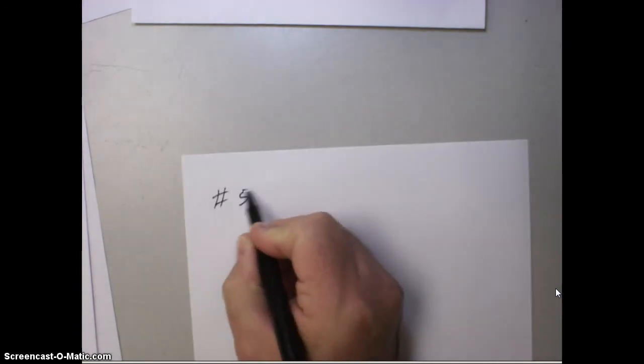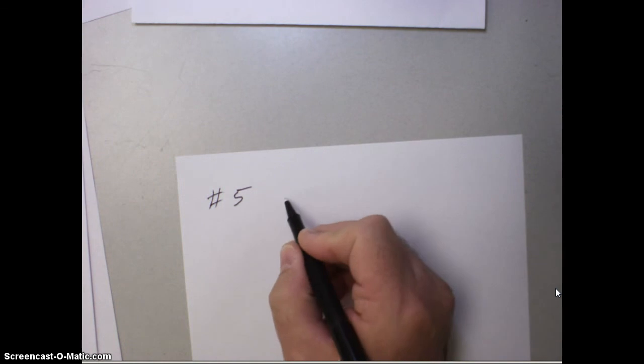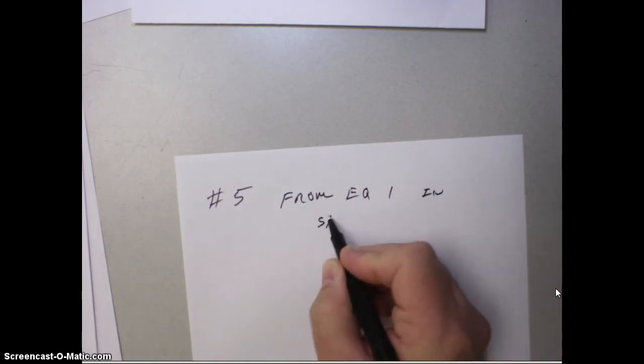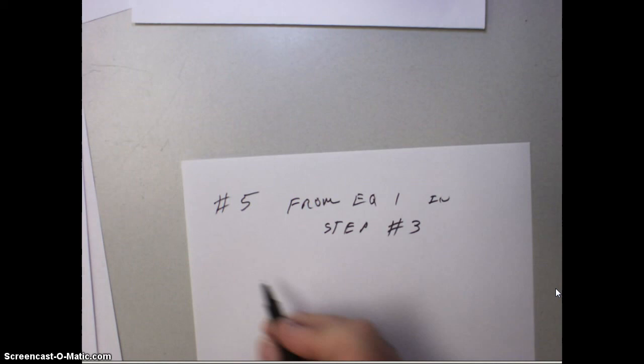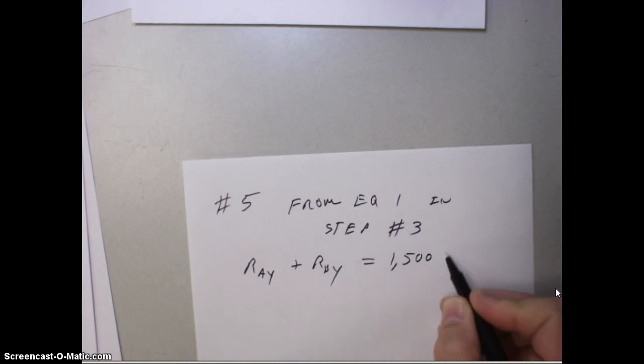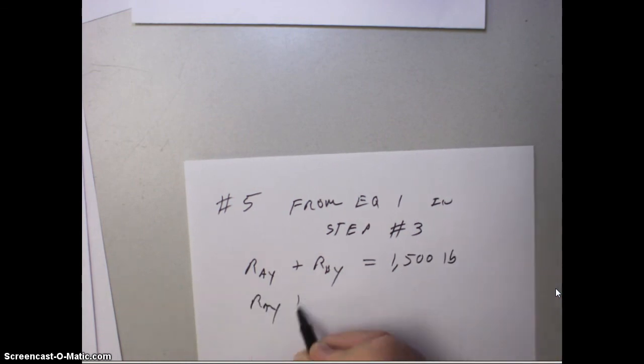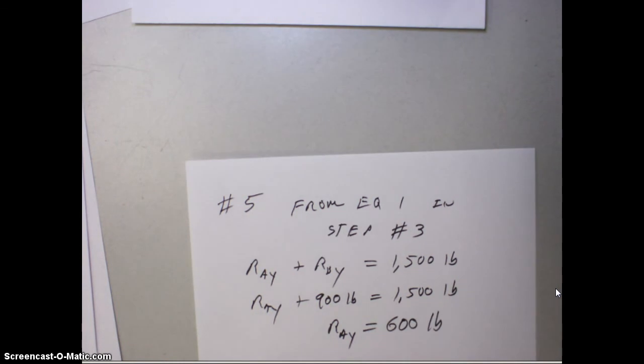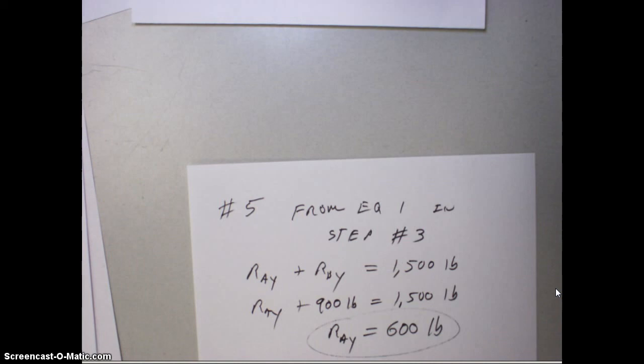Finishing up with step 5. Remember I said we'd go back. We're going to use that equation 1 in step 3. So, let me state that from equation 1 in step number 3. That was RAY plus RBY equals 1,500 pounds. RAY plus what we just discovered in step 4, this 900 pounds here, equals 1,500 pounds. So, RAY equals 600 pounds. So, we found this reaction force from step 5.